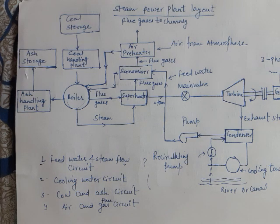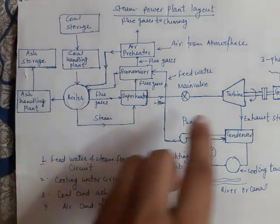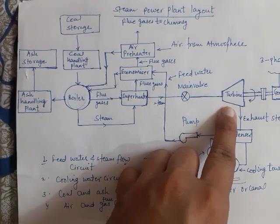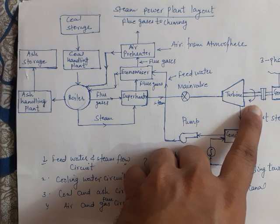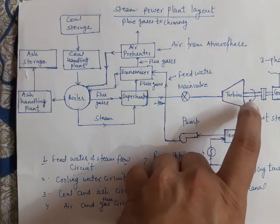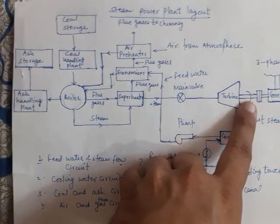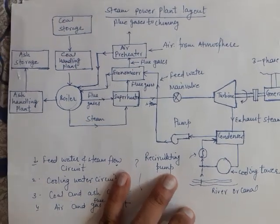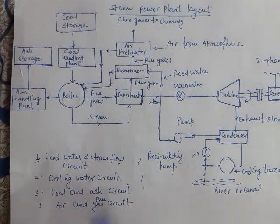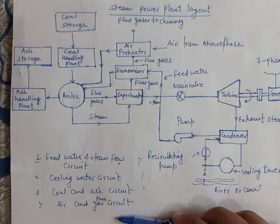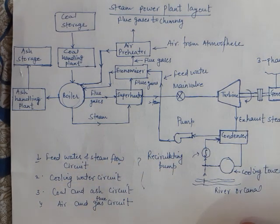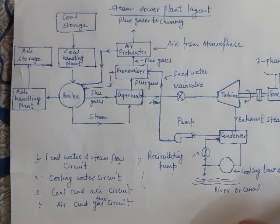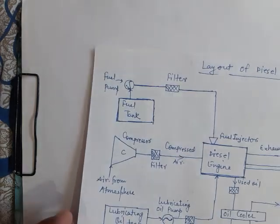This is all about the steam power plant. In summary, steam is generated by the boiler; expansion of steam in the turbine produces mechanical energy by rotating the shaft; the shaft is coupled to the generator, which converts mechanical energy into electrical energy. The whole layout can be explained through these four circuits.